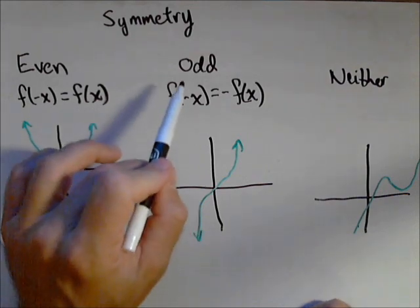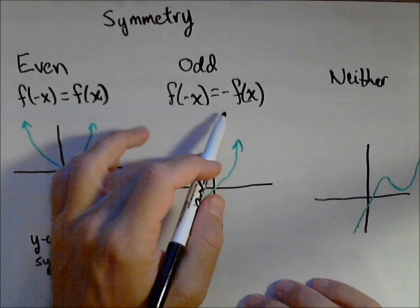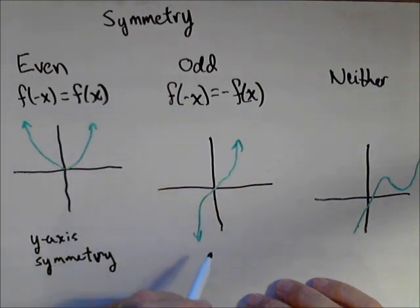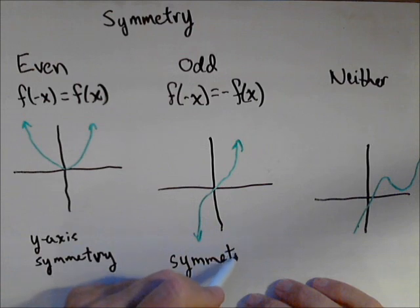The next type of symmetry is for odd functions, and that's where f of negative x equals negative f of x. So changing the sign on the input changes the sign on the output, and then we get what's called a graph that's symmetric about the origin. So the origin is the point zero, zero.